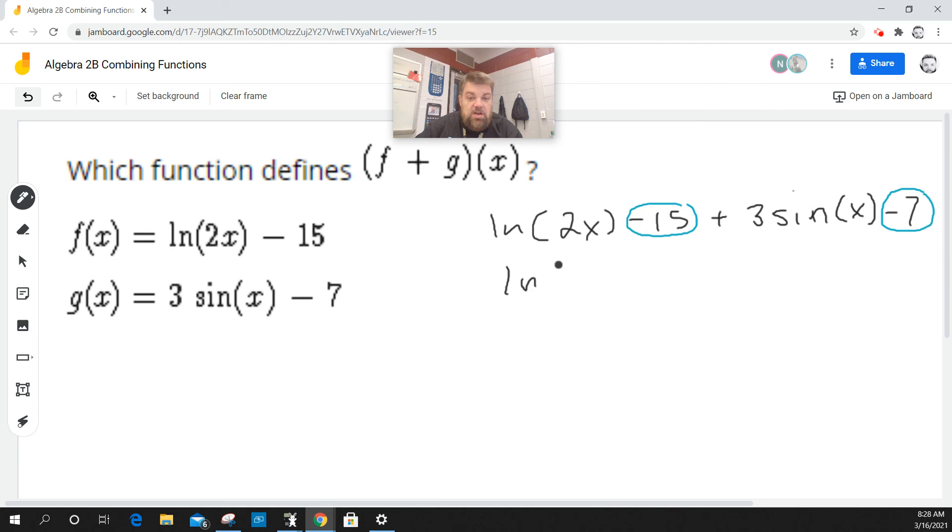We could say that the natural log of 2x plus 3 times sine of x, and then negative 15 minus 7 is actually going to be negative 22. And that is basically it.